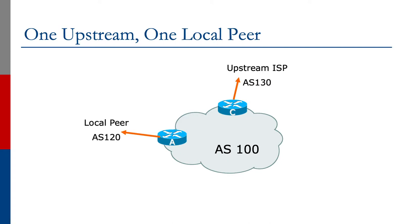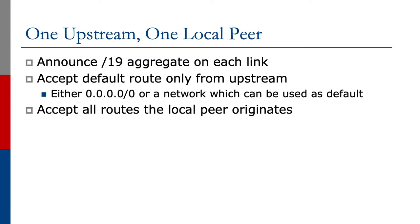We're going to announce the /19 aggregate on each link. We're always announcing the aggregate everywhere. We accept the default route only from the upstream provider — there's absolutely no need for the full BGP table. It doesn't give us any extra information that's useful for traffic engineering.